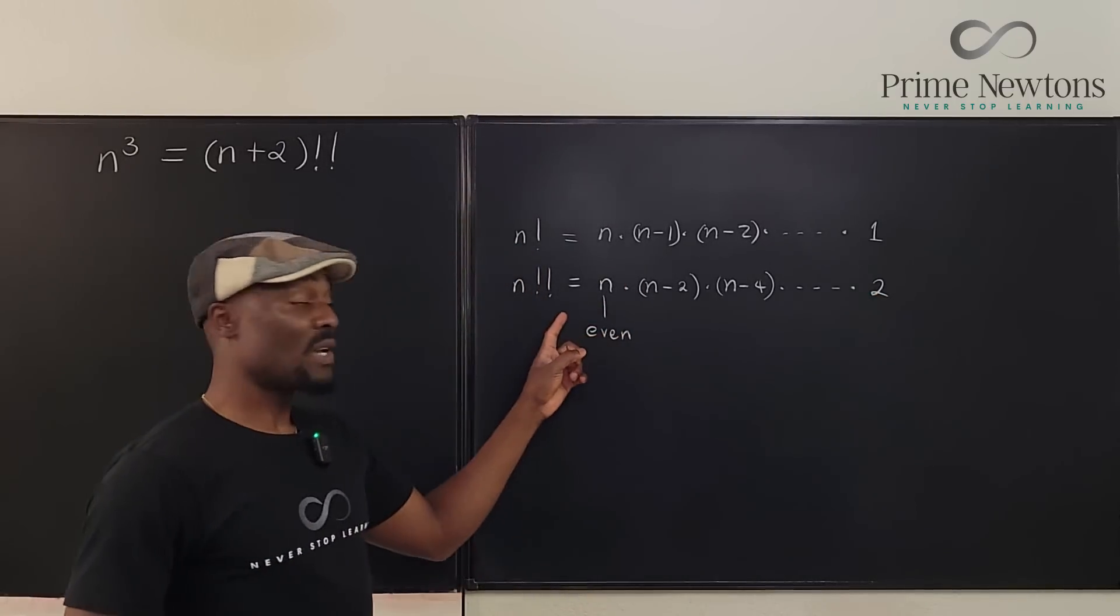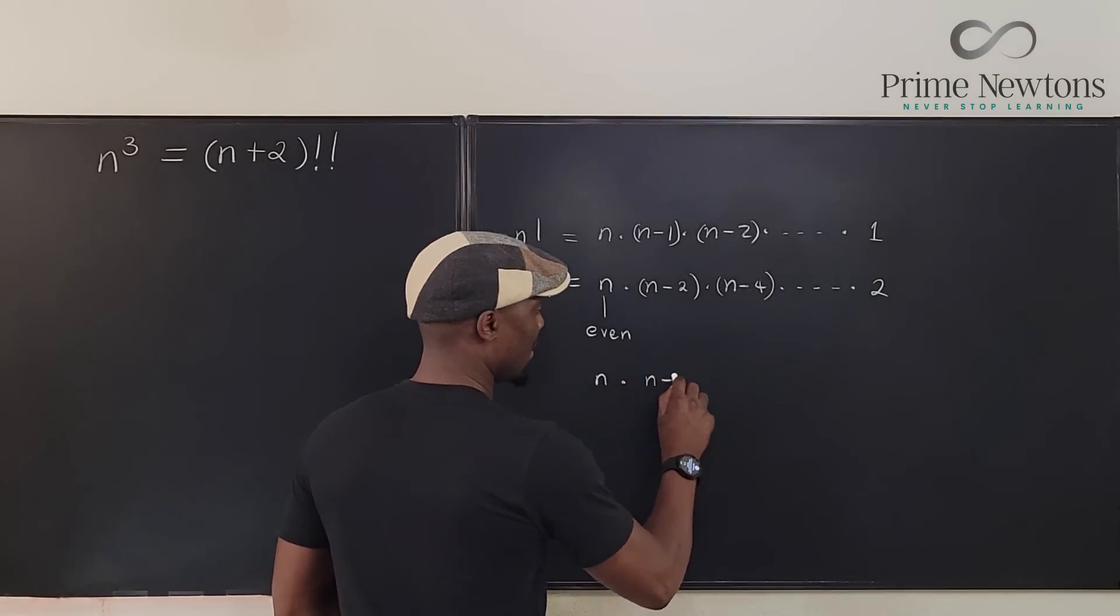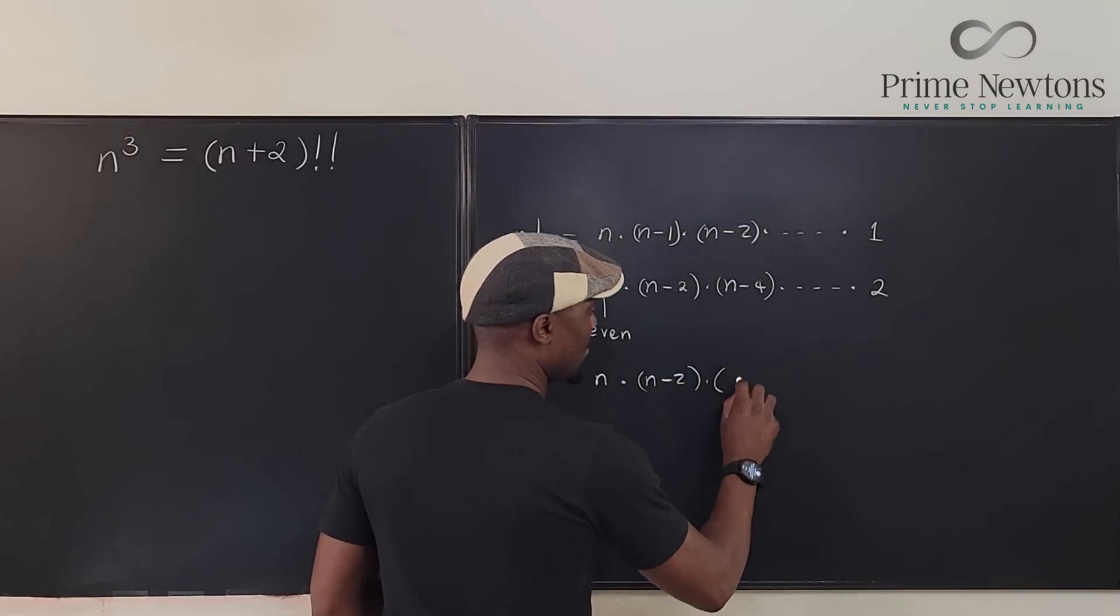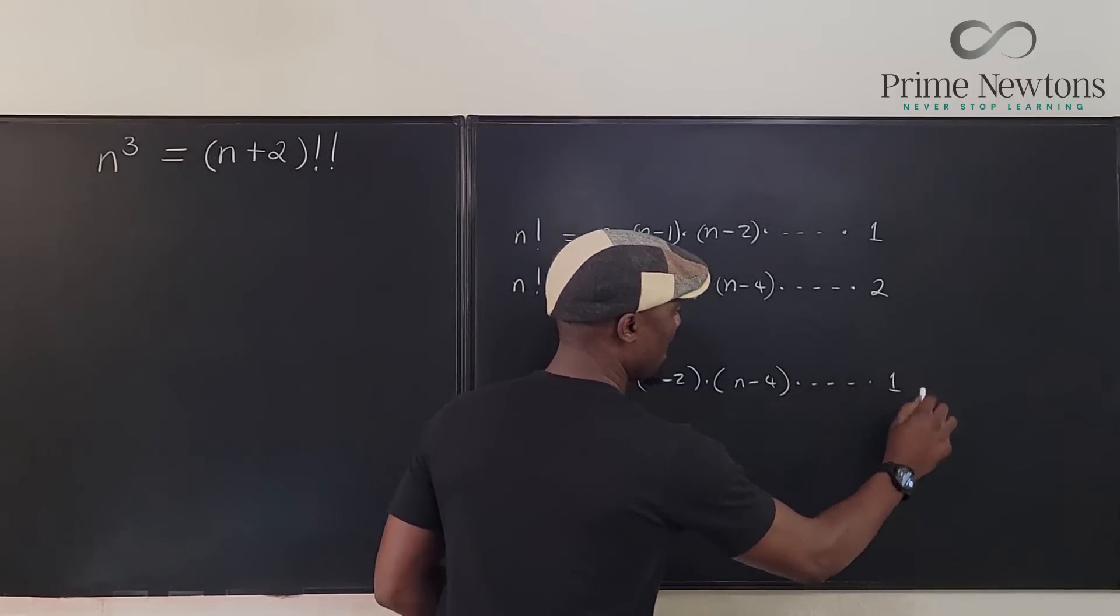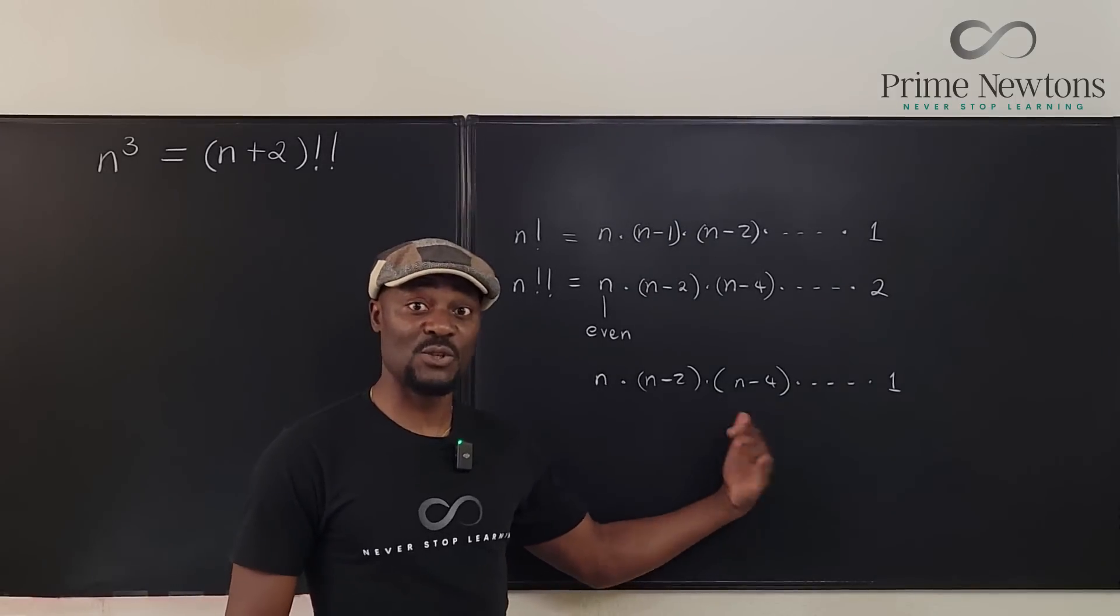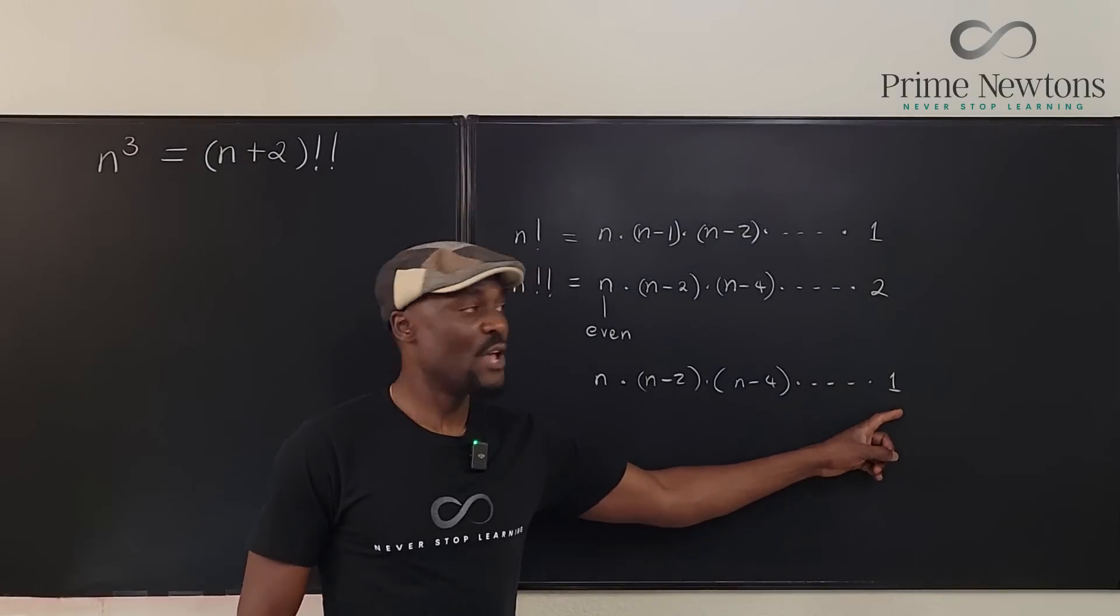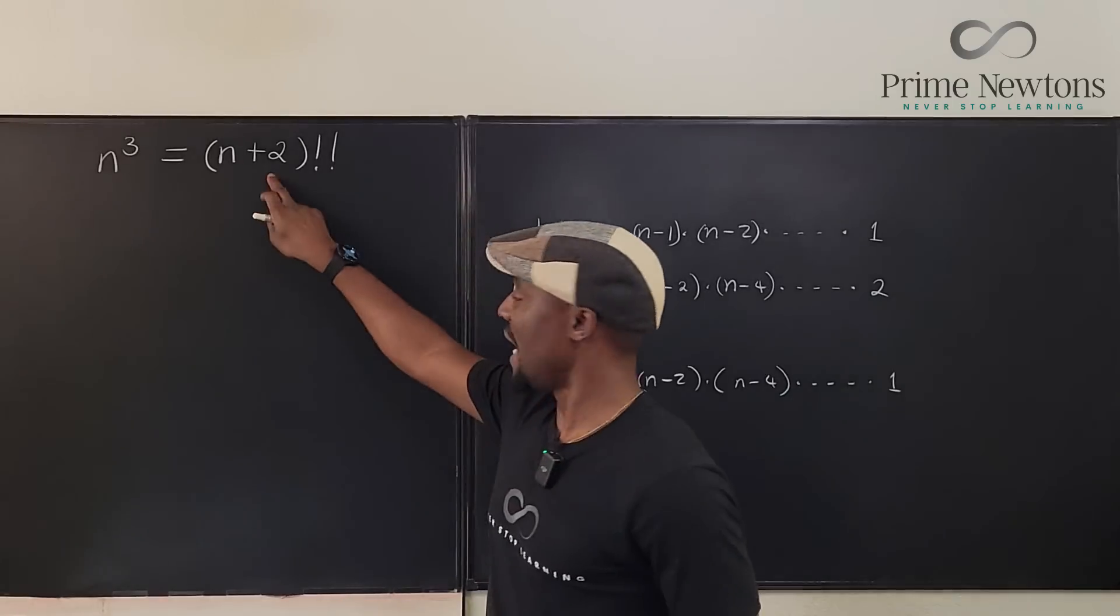So you go from 6 times 4 times 2. You can't subtract 2 because then if you do times 0, it wipes out everything. So you're going to stop here for double factorial. But if the number you started with is odd, then you're going to go n times n minus 2 times n minus 4 times. You keep going until you get to 1. It means you started with an odd number because then if you keep subtracting 2, 2, 2, you're going to end up at 1.